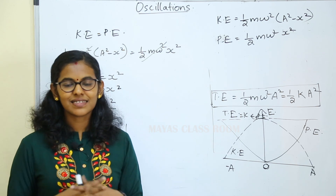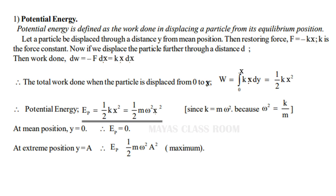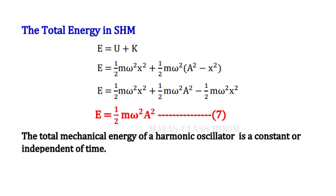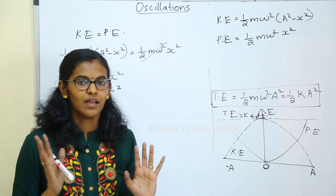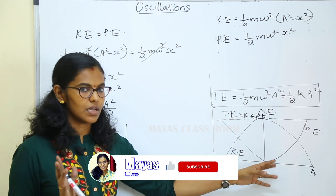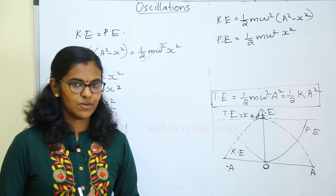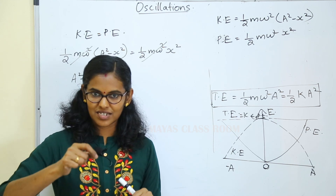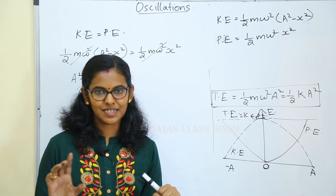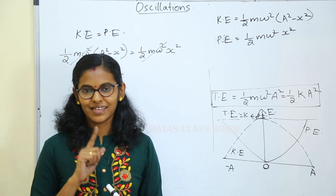In this class, we discussed simple harmonic motion: kinetic energy and potential energy. We discussed total energy, which is the sum of kinetic energy and potential energy, and showed that it is constant. Thank you. We will discuss the next topic in the next class.